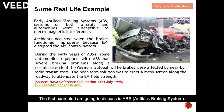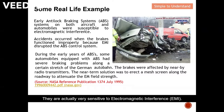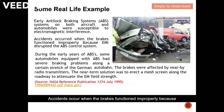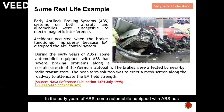The first example I'm going to discuss is the ABS anti-lock braking system. This ABS system is used on both aircraft and automobiles, and it is very sensitive to electromagnetic interference. Accidents occurred when the brake function improperly because electromagnetic interference disrupted the ABS control system.